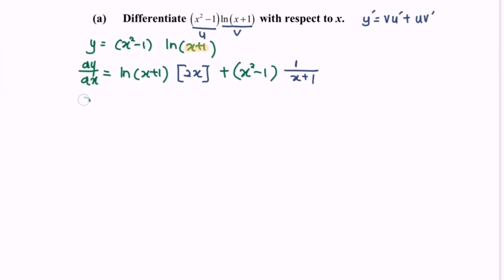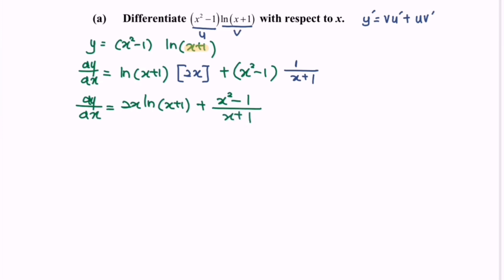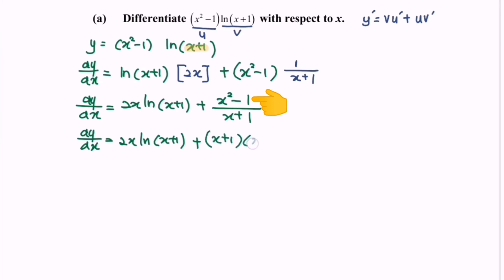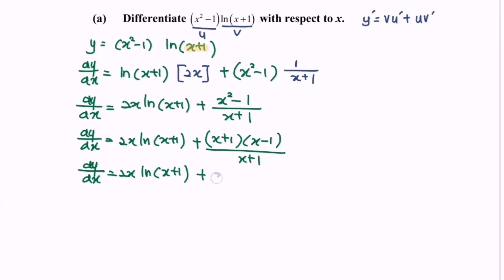Simplify: dy/dx equals 2x ln(x plus 1) plus (x squared minus 1) over (x plus 1). Factorize (x squared minus 1) as (x plus 1)(x minus 1) over (x plus 1). Finally, dy/dx equals 2x ln(x plus 1) plus (x minus 1).